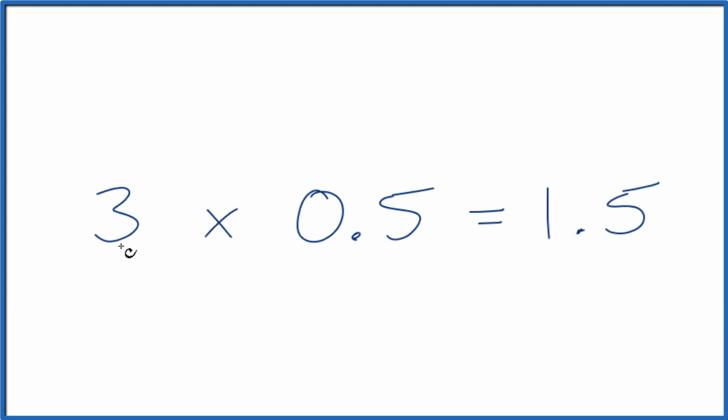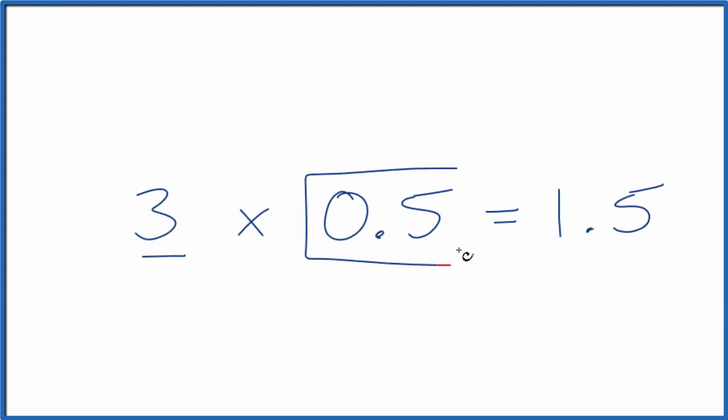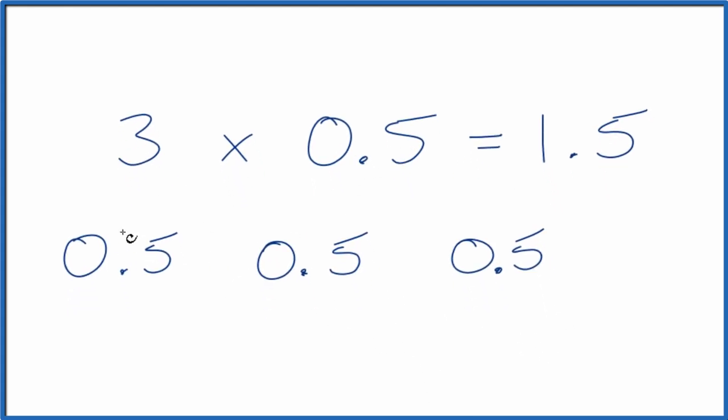Next, you could think about this. You have three 0.5s. So you could just say we have three 0.5s, so 1, 2, 3. We just add those together. 0.5 plus 0.5, that's just 1. 1 plus 0.5, that equals 1.5. So that's another way you could do it.